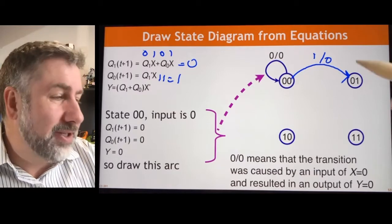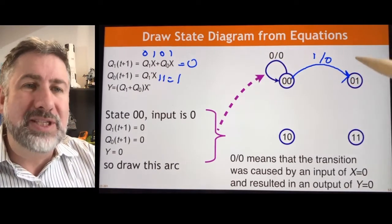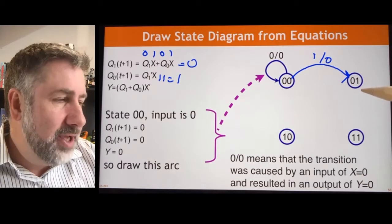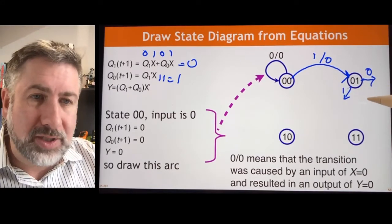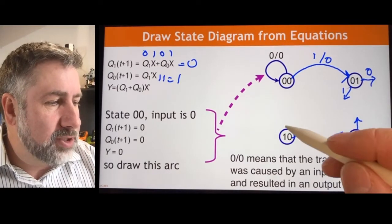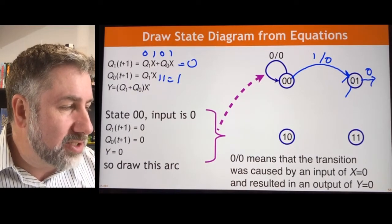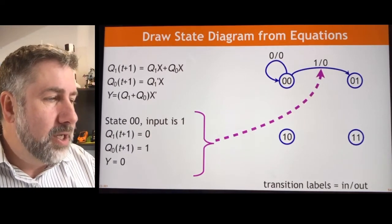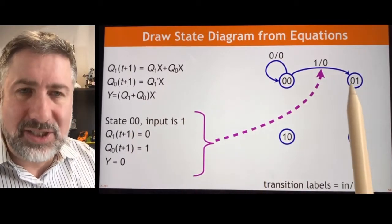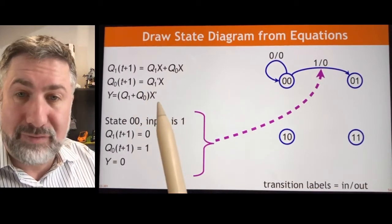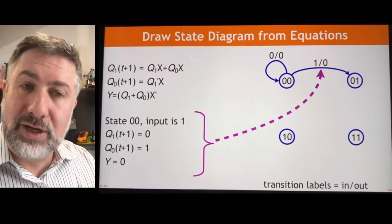We do that for every other possibility. For every state we have to evaluate as many input combinations as there are — here, two possibilities per state since there is only one input variable. So if I'm in state 01 and I get a 0, and if I'm in state 01 and I get a 1, those are the two possibilities. We just have to do the math and figure out where each transition goes. I'll leave that as an exercise and give you the end result.